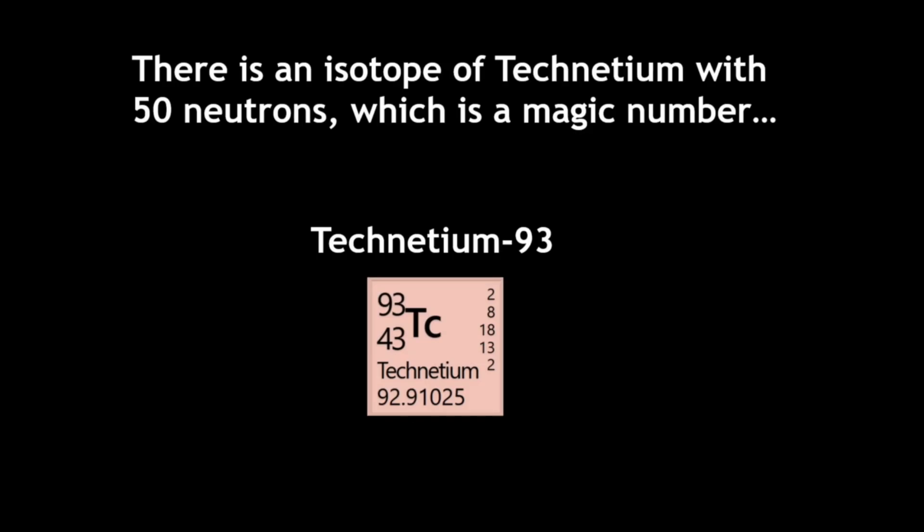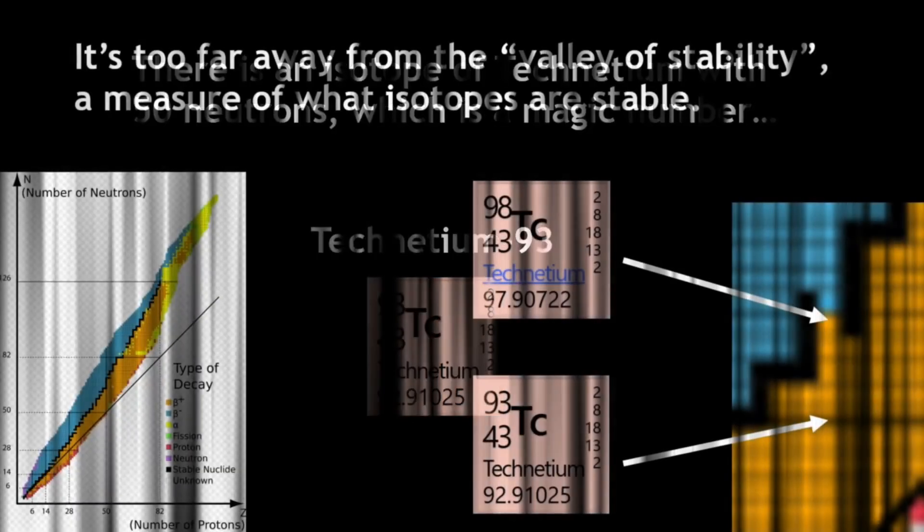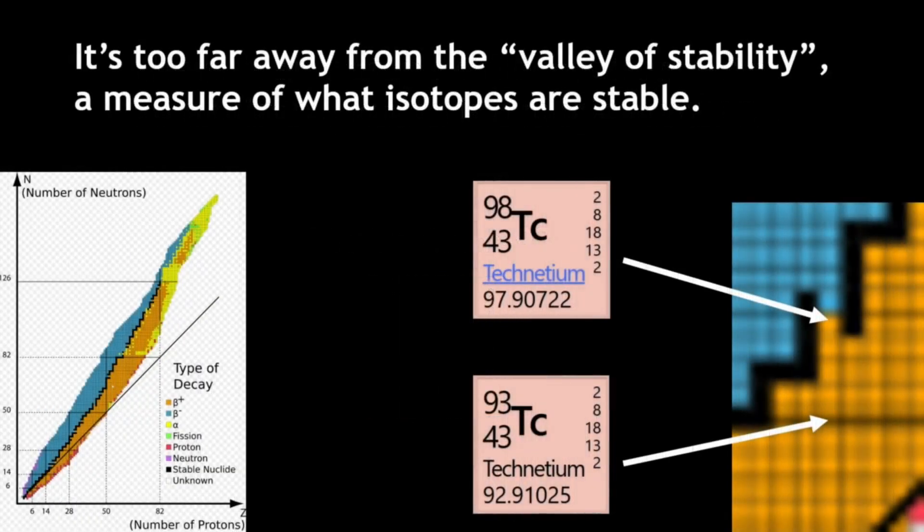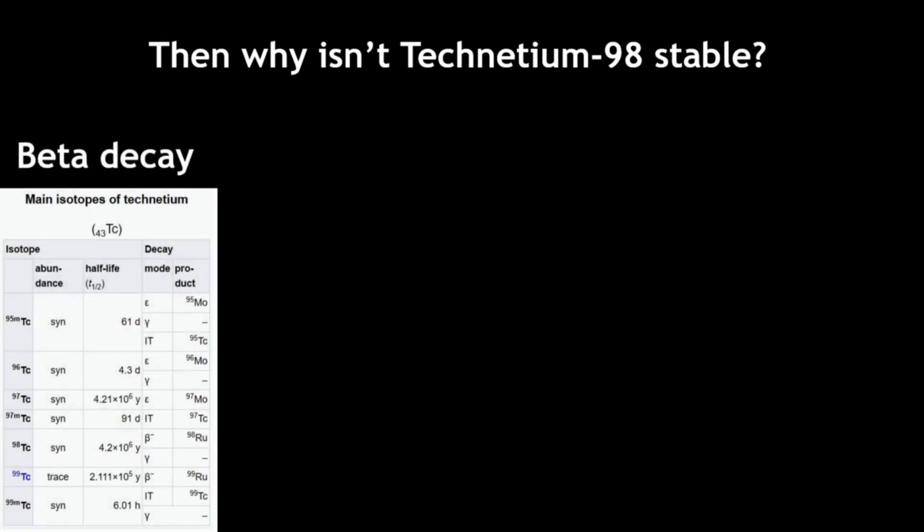While there is an isotope of technetium with 50 neutrons, technetium-93, it is too far away from the valley of stability, a concept which determines what ratio of protons to neutrons is ideal for an element to be stable. Based on the valley of stability, the isotope technetium-98 should be stable.